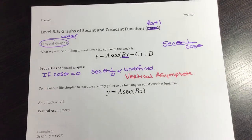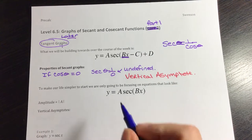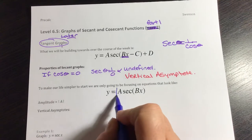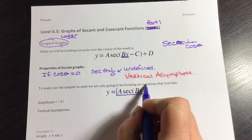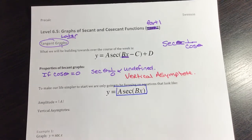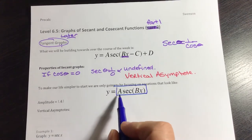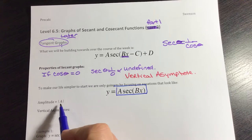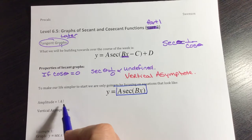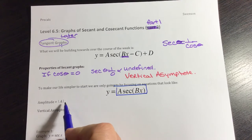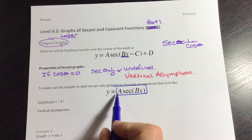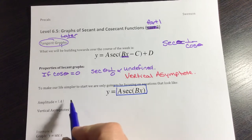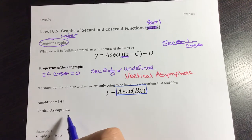So we're just going to do some basic y = A·sec(Bx), where A is the amplitude — and the amplitude is a positive value. If we have a negative A, that just means we're doing a flip.